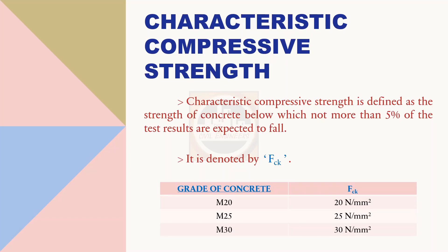Here are examples of fck for different grades of concrete: M20 has fck of 20 N/mm², M25 has 25 N/mm², and M30 has 30 N/mm². Likewise, the fck value corresponds to the grade number of the concrete.